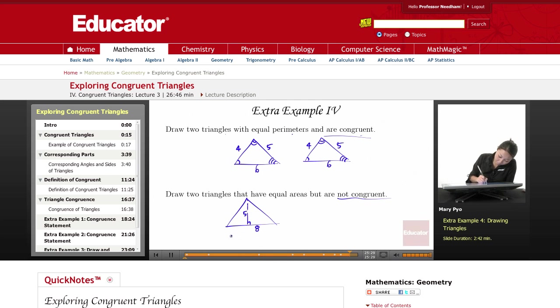Then the area here is going to be 20 units squared because 8 times 5 is 40 divided by 2 is 20. So that's one triangle.